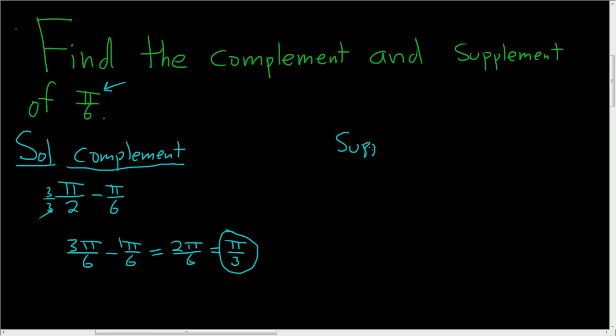To find the supplement, well the supplement of pi over 6 is the angle that you add to pi over 6 in order to get pi. So to find the supplement just always take pi and subtract pi over 6 in this case. So it's pi minus your angle.